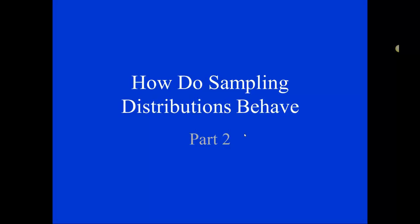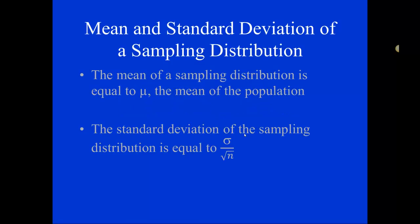In previous videos, we've looked at how sampling distributions behave with regards to their mean and standard deviation. We found that the mean of a sampling distribution is always going to be equal to mu, the mean of the population.